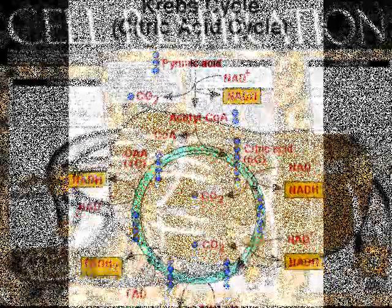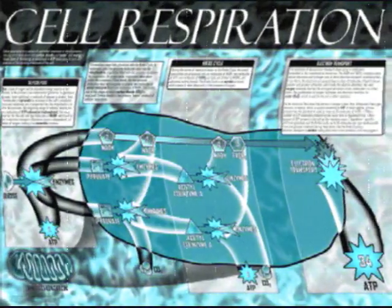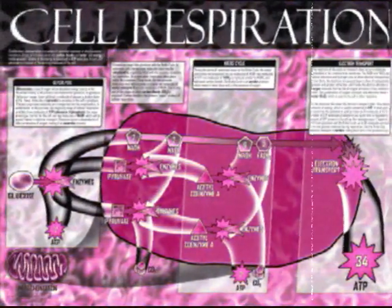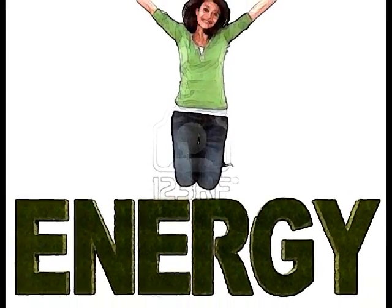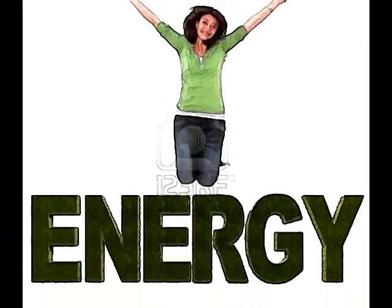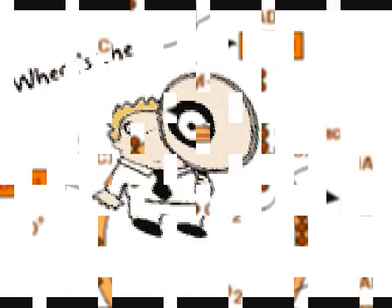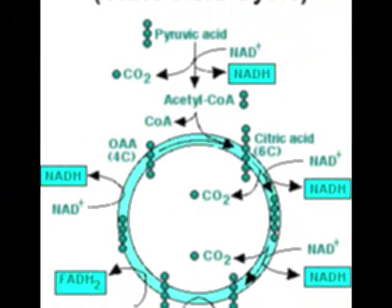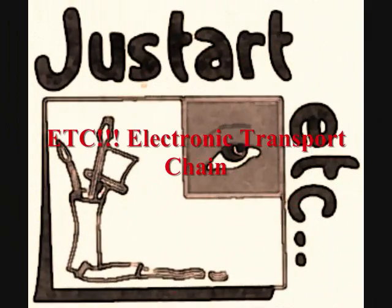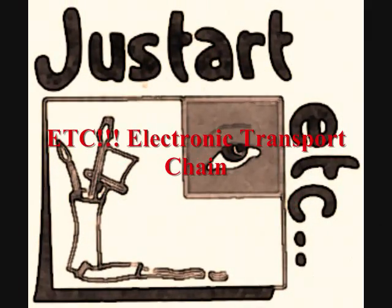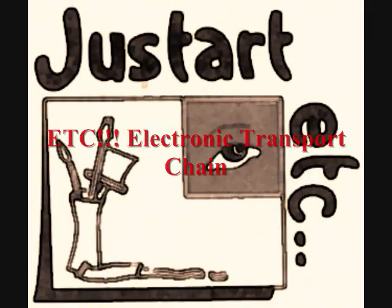Cellular respiration is the most efficient way of getting energy stored within the plants. After the sugars have undergone the process of Krebs cycle, we have ETC — electron transport chain.